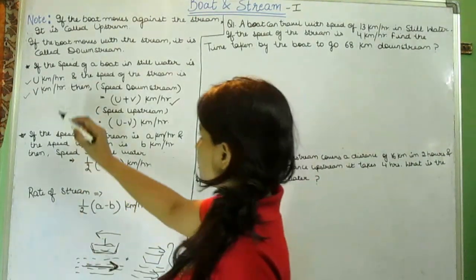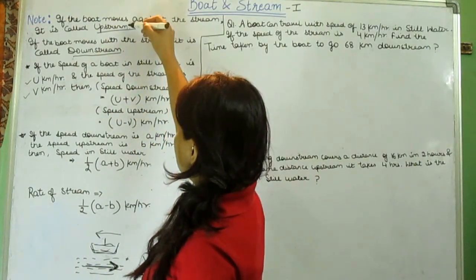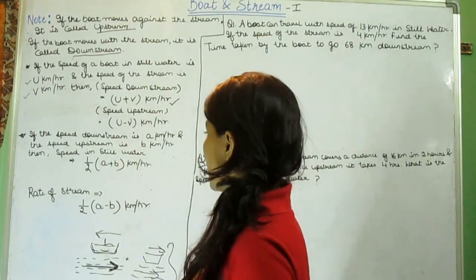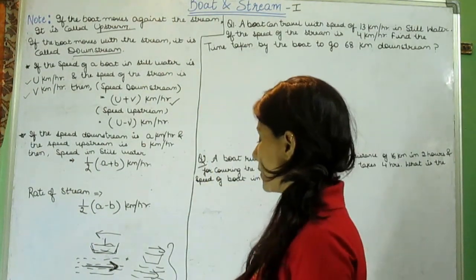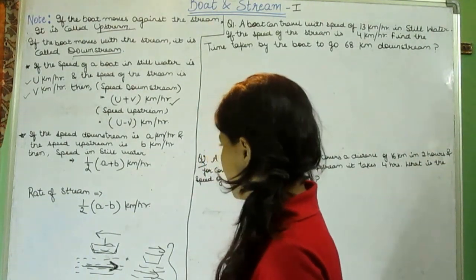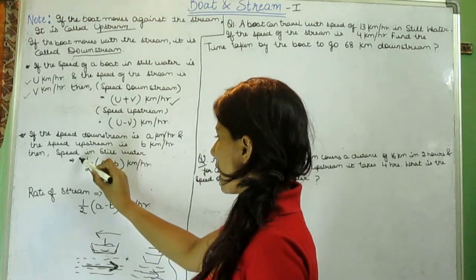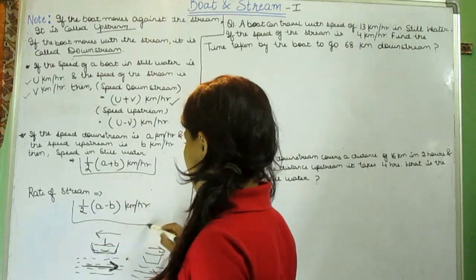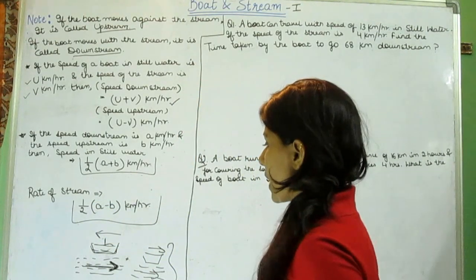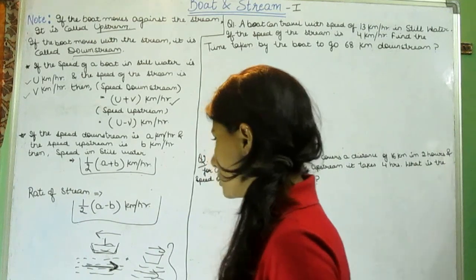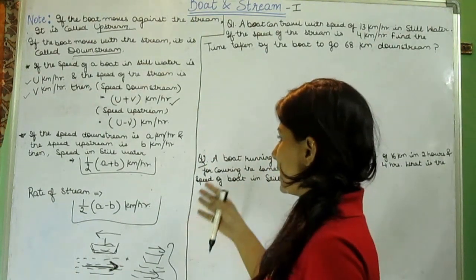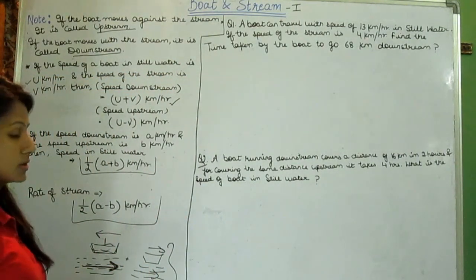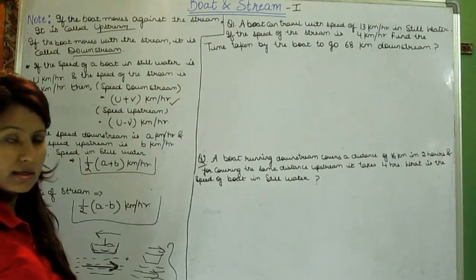Next, learn all these notes. If the speed downstream is a km/hr and the speed upstream is b km/hr, then the speed in still water will be half of a plus b, and the speed in rate of stream, it means running water, will be half of a minus b km/hr. So based on these formulas, tricks or notes whatever you can say, we have two questions on the boat. So we're gonna solve this question.